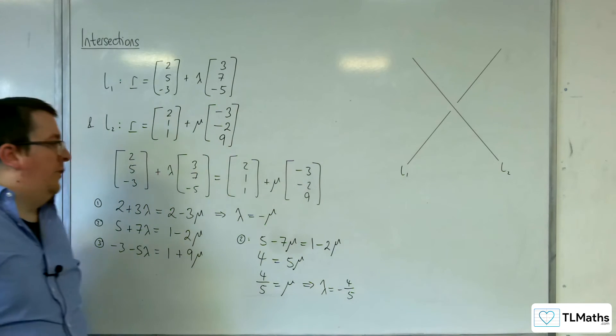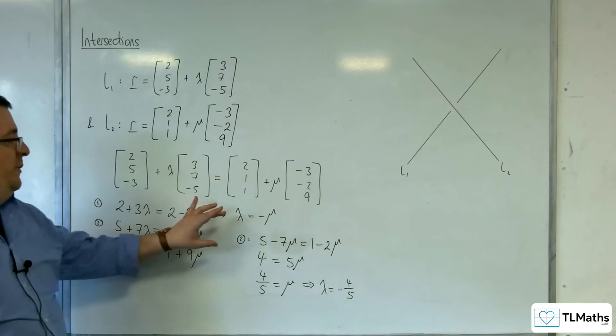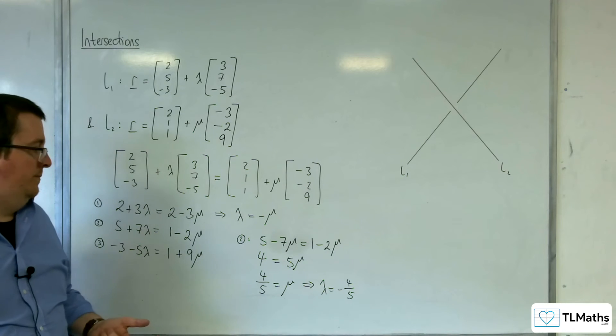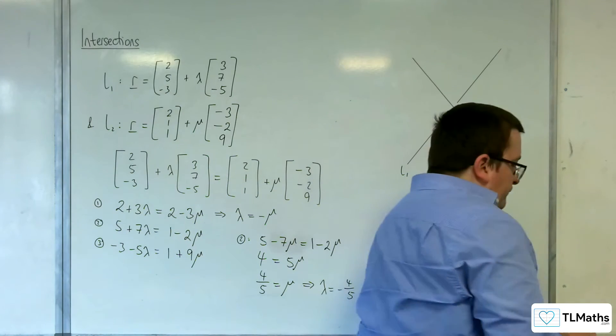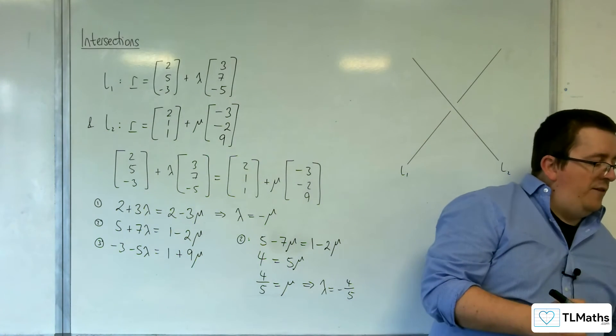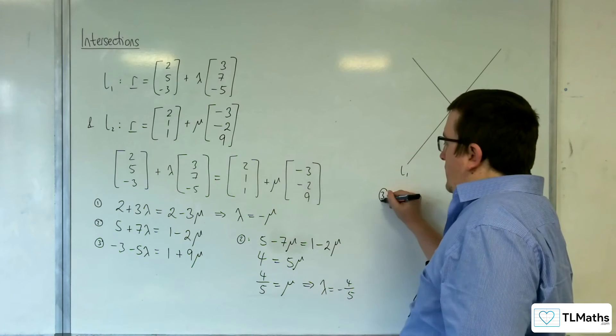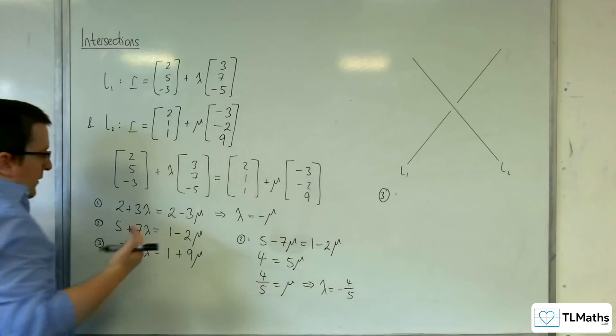So what we've done is we have solved the simultaneous equations for 1 and 2. We've got a value for lambda, we've got a value for mu. Now we must check it in equation 3. So if it works in equation 3, then they intersect. If it doesn't work, it doesn't intersect.